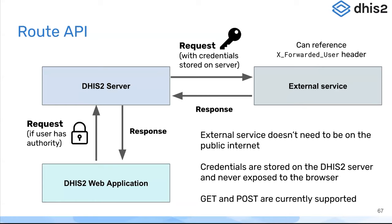That request gets sent on to the external service, which has access to a custom header called X-Forwarded-User, which specifies which user of DHIS2 actually made that request. The external service can then make a request back to the DHIS2 server to find out what that user has access to, or what particular form they want to access. Finally, that external service sends a response back to the DHIS2 server, which forwards it on to the web application. So from the web application's perspective, it's just making a request to DHIS2, and behind the scenes that's going off and doing things with an external service that importantly doesn't need to be exposed to the public internet, which adds a lot of security to the system.